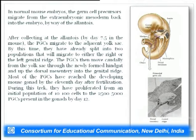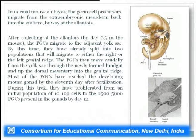After collecting at the allantois by day 7.5 DPC in the mouse, PGCs migrate to the adjacent yolk sac, by which time they have split into two populations migrating to either the right or left genital ridge. PGCs then move caudally from the yolk sac through the newly formed hindgut, up the dorsal mesentery, into the genital ridge. Most PGCs reach the developing mouse gonad by day 11 after fertilization, having proliferated from around 10–100 cells to approximately 2,500 PGCs by day 12.